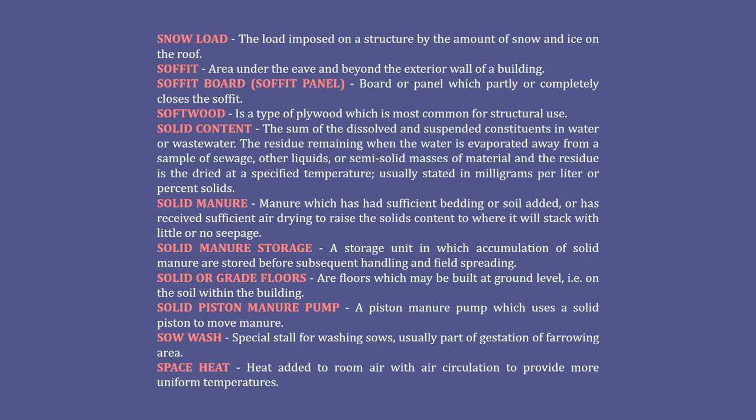Slurry manure: manure in which the total solids content approximates that of excreted manure. Snow load: the load imposed on a structure by the amount of snow and ice on the roof. Soffit: area under the eave beyond the exterior wall of a building. Soffit board or soffit panel: a board or panel which partly or completely closes the soffit. Softwood: a type of plywood which is most common for structural use.